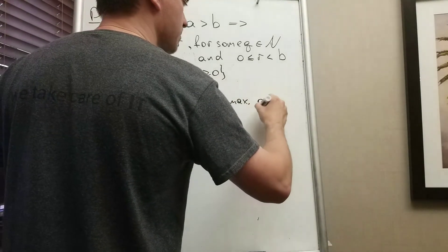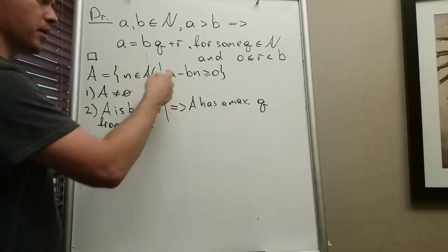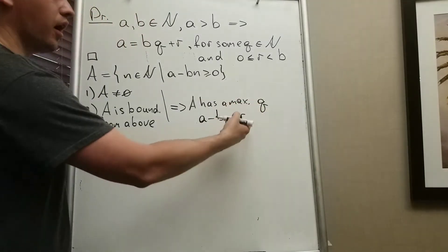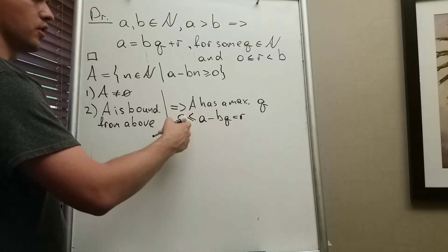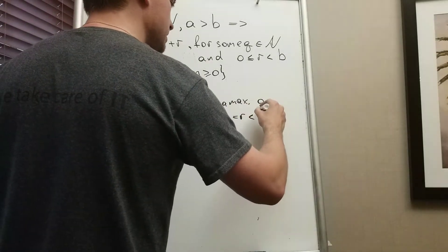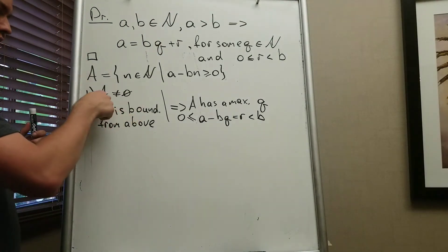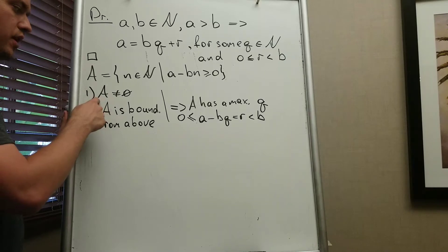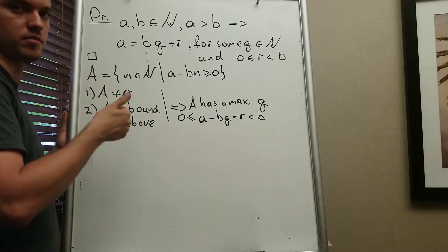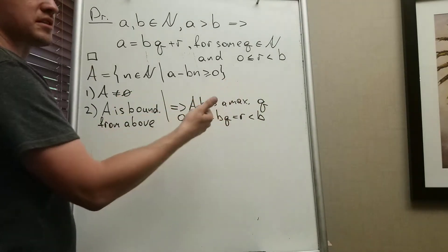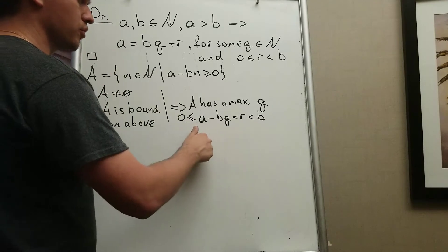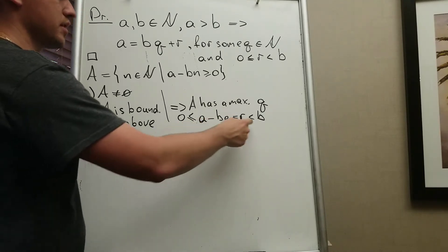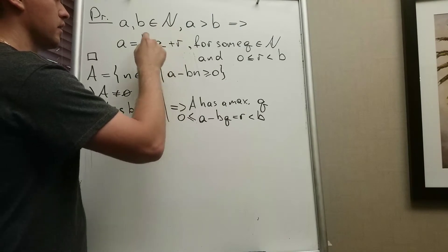I'll call this maximum element Q. Once I find Q, I'll define R = A − BQ and show that R satisfies 0 ≤ R < B. So the proof outline is: show A is non-empty, show A is bounded from above, apply the previous lemma to get a unique maximum element Q, then define R and verify the bounds.